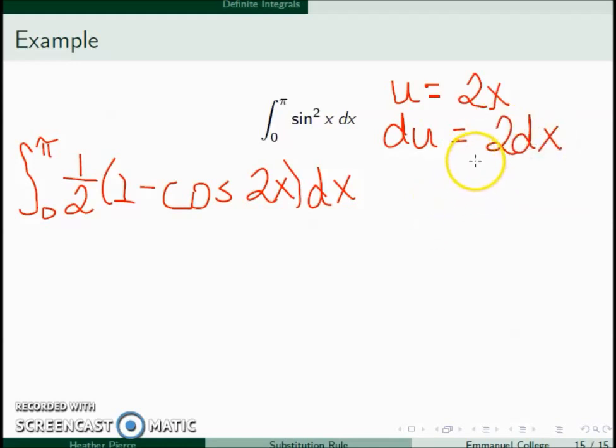So now I'll let u be equal to 2x so that du is equal to 2 dx. I don't have a 2 dx, so I'll have to divide both sides to get 1 half du is equal to dx. So this becomes 1 minus cosine u. I still have this 1 half out front, and then dx is going to become 1 half du, so 1 half times 1 half will be 1 over 4 du.